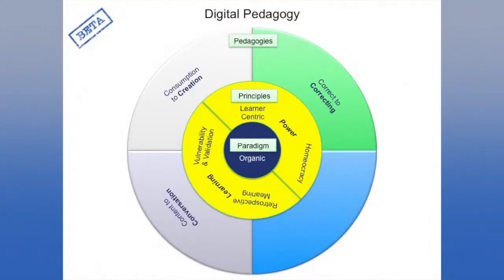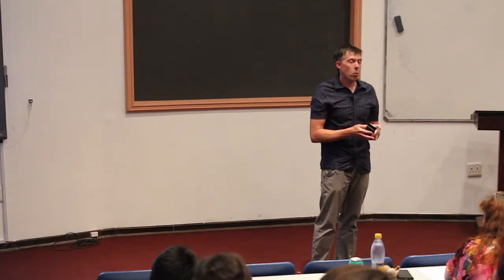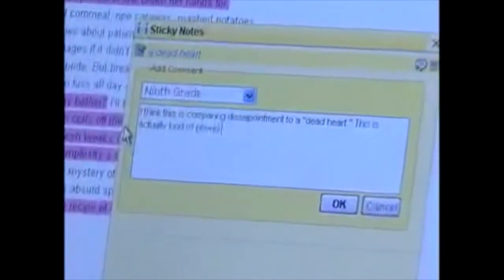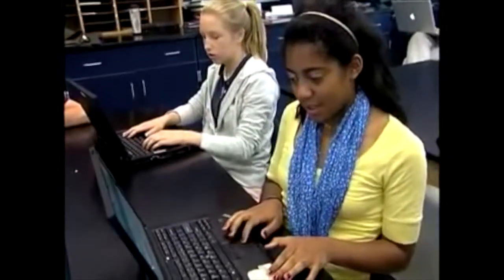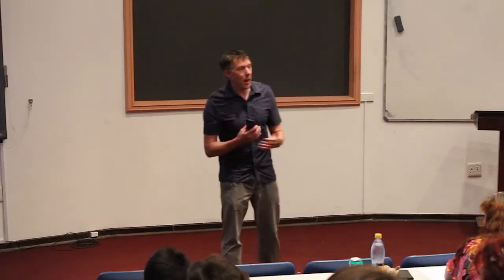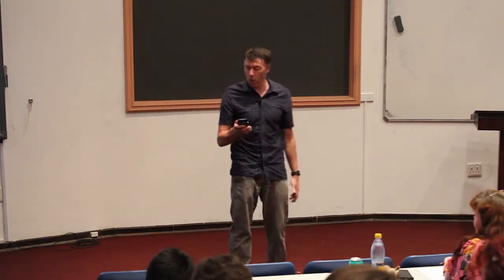The third pedagogy is to move from content to conversation. We've all been schooled in teaching through content — here's a poem, the blunt language is clear in the title, the voice is clear, we explain it, they read the textbook. What about encouraging them to have a conversation around the poem? Using a tool like Diigo, you highlight a line and comment, and you can see all the other comments people have made. There's vulnerability because they're removed from it, but they're talking about it. That's the pedagogy of conversation.